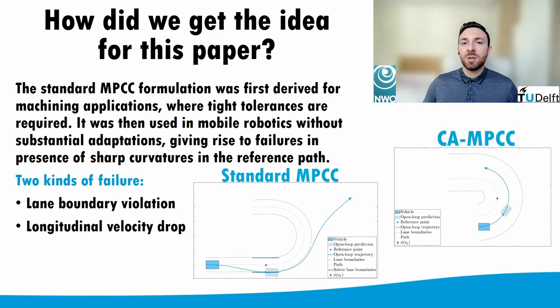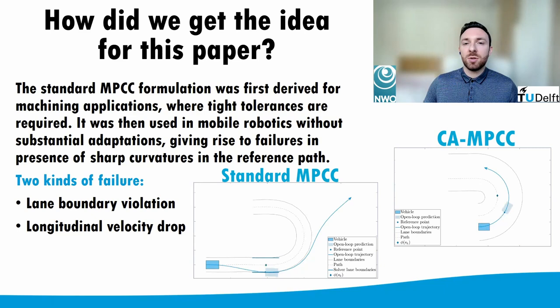We noticed two kinds of failure connected to large deviations from the reference path. For low gains, we observed incorrect lane boundary evaluation, which leads to the vehicle actually violating these constraints. For higher control gains on lateral deviations from the path, we observed a significant drop in longitudinal speed when steering saturation occurs.